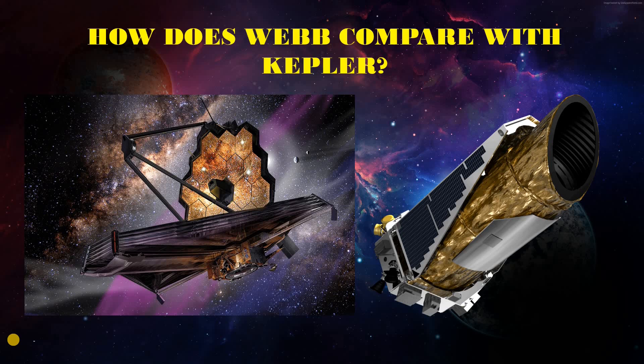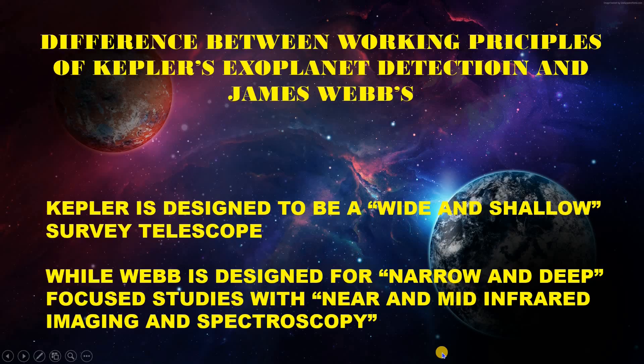To find life, NASA launched space telescopes like Kepler, Spitzer, Hubble, and recently the James Webb Space Telescope. Hello everyone. In this topic, I would like to build the brief working differences between the Kepler and the James Webb Space Telescope.